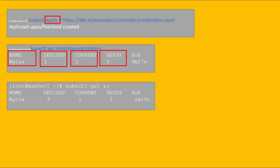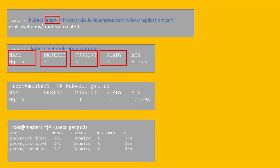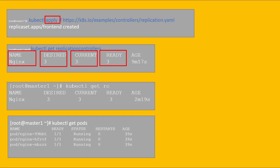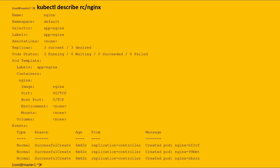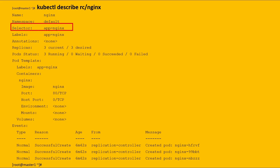If we execute the kubectl get pods command, all the pods are running. One can notice the replication controller name followed by a hyphen and then five characters mixed with alphabet and numeric. Now we know how to create the replication controller. The next topic is how to find more information about the replication controller. We can use the kubectl describe command with the replication controller slash name. The output shows the name of the replication controller, then selector app equals nginx — meaning the replication controller will select pods whose label is app equals nginx.